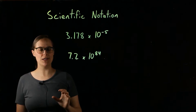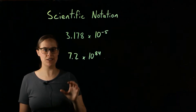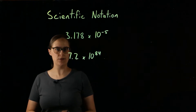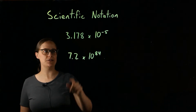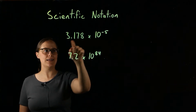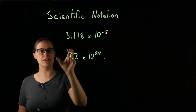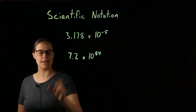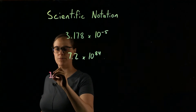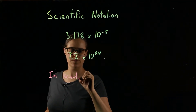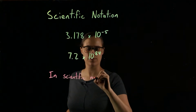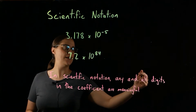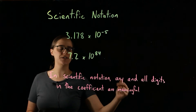I do have a full video about scientific notation if you need more information about it. Our one and only rule for scientific notation is: any and all digits in the coefficient are significant. The coefficient is the number at the beginning, and any and all digits in it are meaningful.